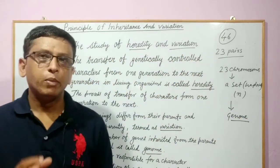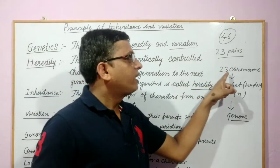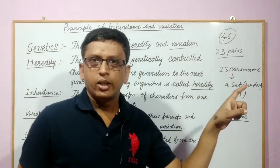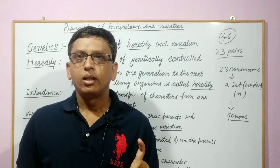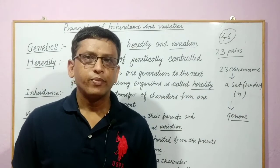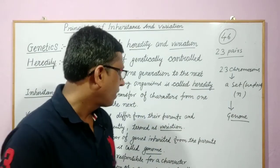That is the number of genes present in 23 chromosomes of a human being is equal to the genome. That is the total number of genes.